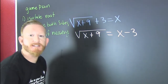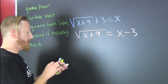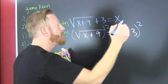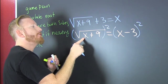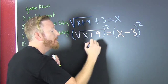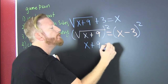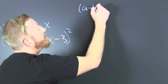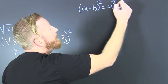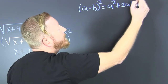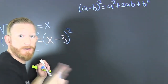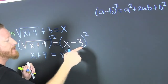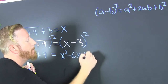Step two, we're going to square both sides. I square the left side — the square root of a radical is the radicand, so we eradicated that root. On the right side, I'm using the formula: if I had (a minus b) squared, that's a squared minus two ab plus b squared. So that gives us x squared minus six x plus nine.